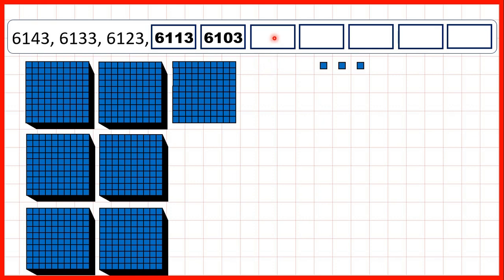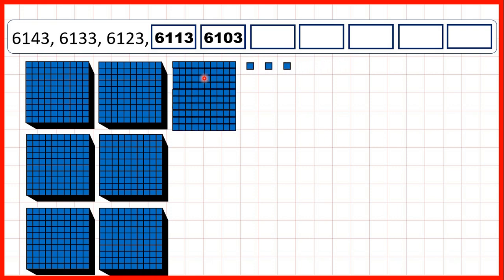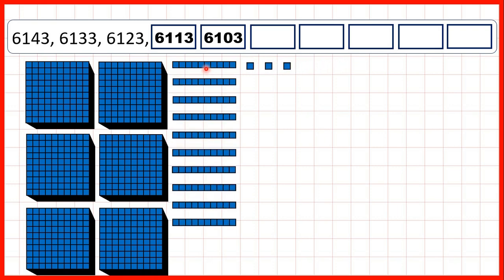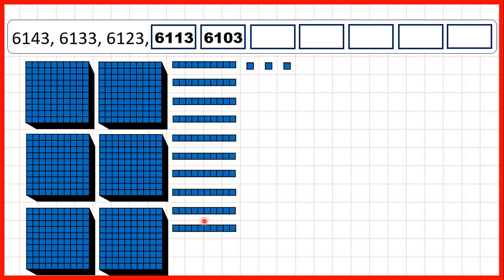But now we need to subtract tens, but we don't have any tens in the number that we're subtracting from. So what we can do is exchange our hundred for ten tens. And then, when we subtract ten, we get 6,093.